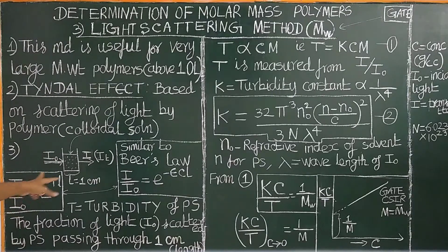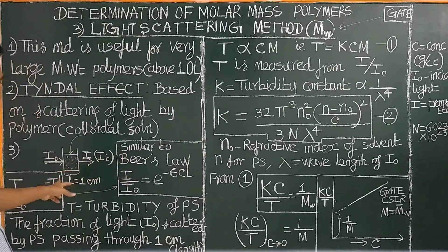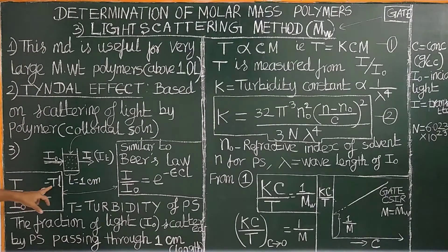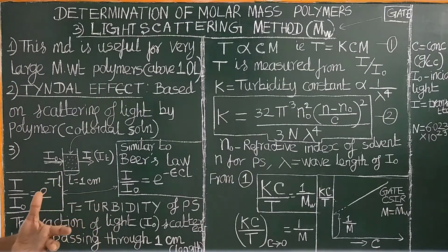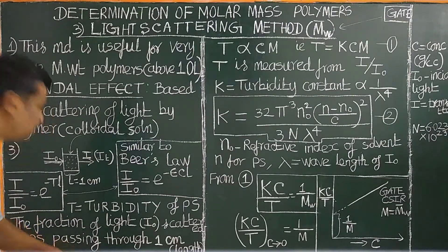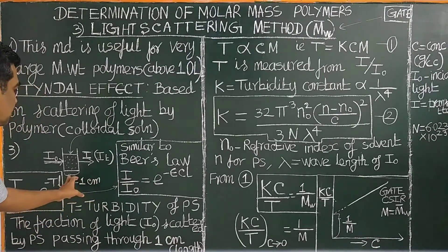The path length refers to the turbidity meter — it is a UV cell, similar to a UV cell, with a path length of 1 centimeter. Here, τ (turbidity) is defined as the fraction of light scattered by the polymer solution when passed through a polymer solution of 1 centimeter path length.